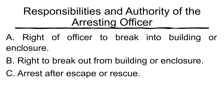Responsibilities and authority of the arresting officer: the right of an officer to break into a building or enclosure — an officer, in order to make an arrest either by virtue of a warrant or without a warrant, may break into a building or enclosure where the person to be arrested is or is reasonably believed to be, if he is refused admittance, after announcing his authority and purpose. This rule is only applicable once the arresting officer informs the occupants of the private property of his authority and purpose. If they will not allow him to enter, then he may break into the building or enclosure.